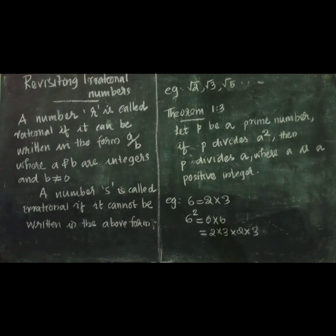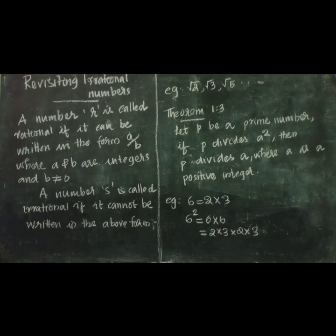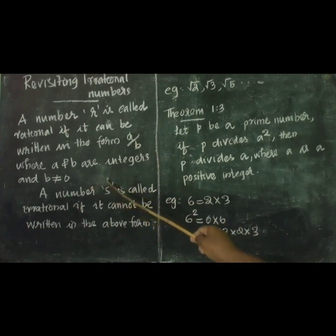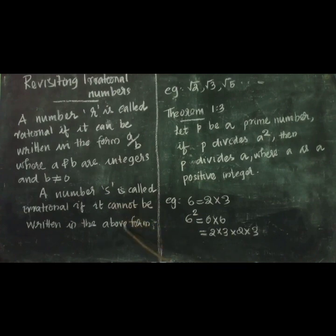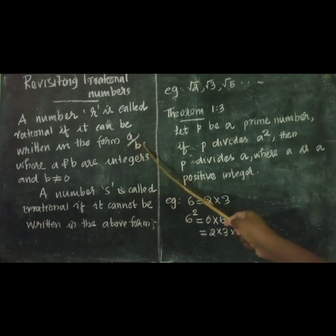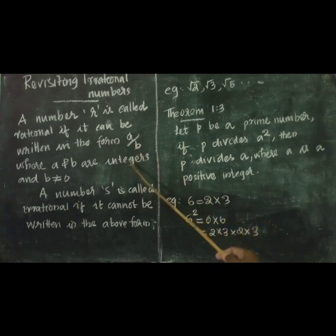Today we are going to prove that root 2 is an irrational number. One of the theorems we use in our proof is the Fundamental Theorem of Arithmetic. So let us recall: a number r is called rational if it can be written in the form a by b, where a and b are integers and b not equal to 0. A number s is called irrational if it cannot be written in the above form — that is, if it cannot be written as a by b where a and b are integers and b not equal to 0.